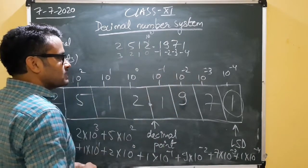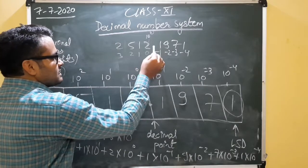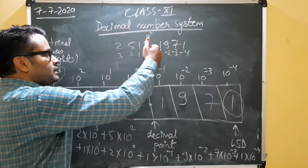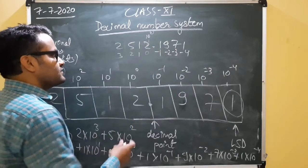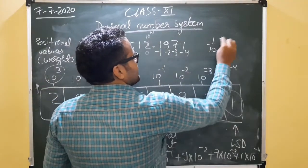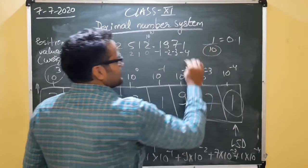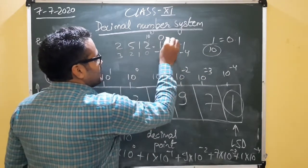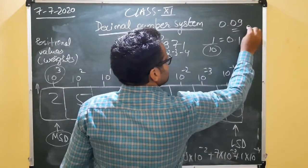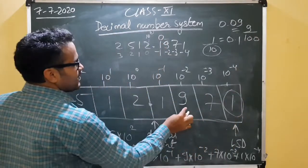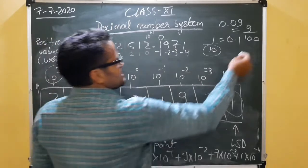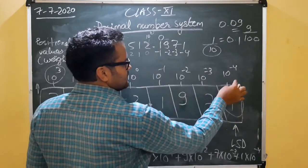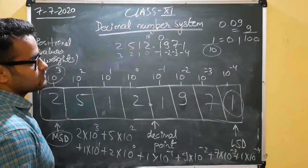Why do the powers decrement by 1? Because as we shift to the left the number is 10 times greater. But going to the right of the decimal, 1/10 is written as 0.1, so 10 is in the denominator and the power becomes 10 to the power minus 1. Similarly, 0.09 is 9 upon 100, so it is 9 × 10⁻². This shows 7 is divided by 1000 and 1 is divided by 10,000. The leftmost digit is the most significant digit (MSD) and the rightmost is the least significant digit (LSD).